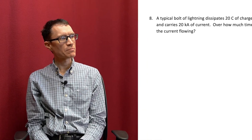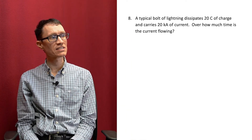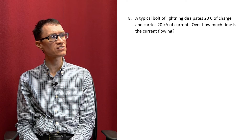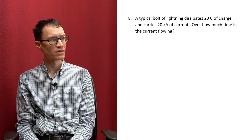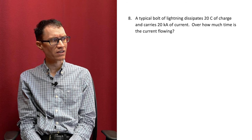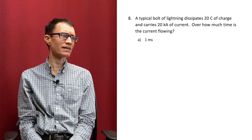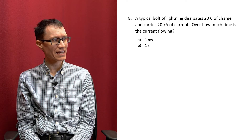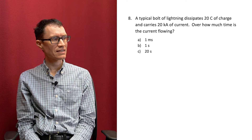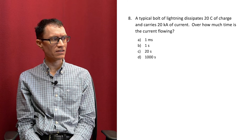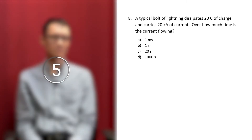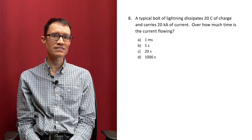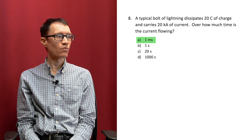Let's take a look at question 8. A typical bolt of lightning dissipates 20 coulombs of charge and carries 20 kiloamperes of current. Over how much time is the current flowing? A: One millisecond. B: One second. C: Twenty seconds. Or D: A thousand seconds. The correct answer is A — one millisecond.